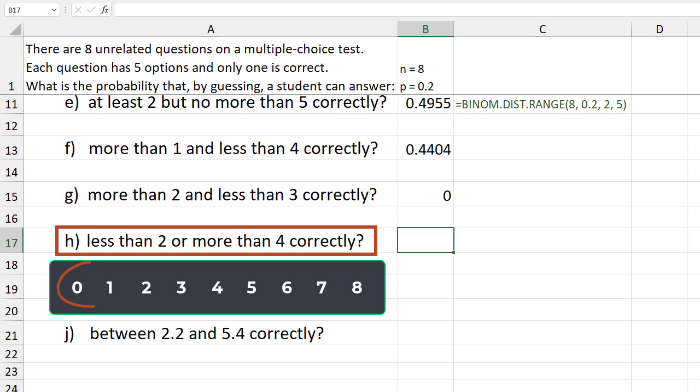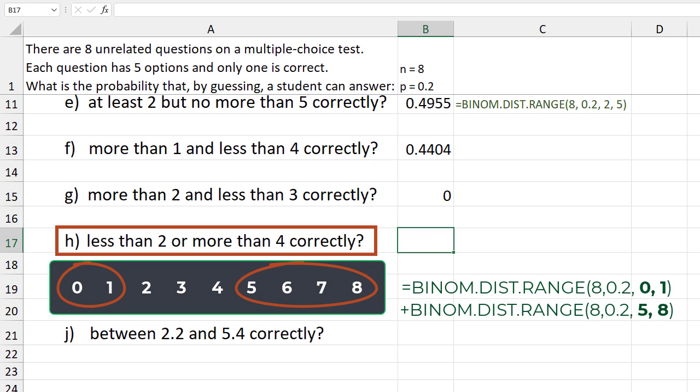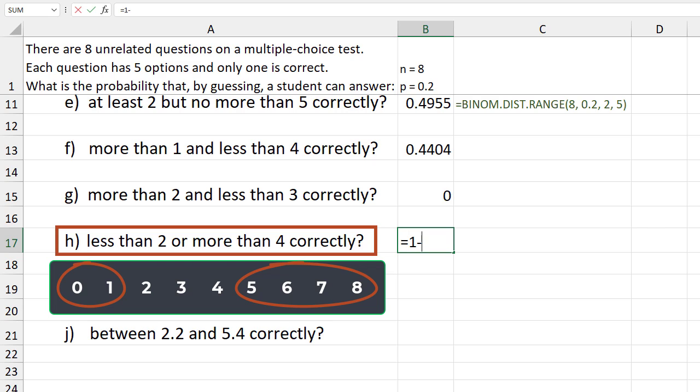For h, less than 2 or more than 4 requires us to add up the probabilities for the successes below 2 to those above 4. Or we can use the complement rule. That is, 1 minus the probability of going from 2 to 4, which would give the same result.